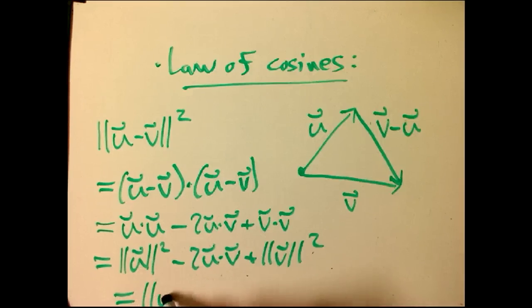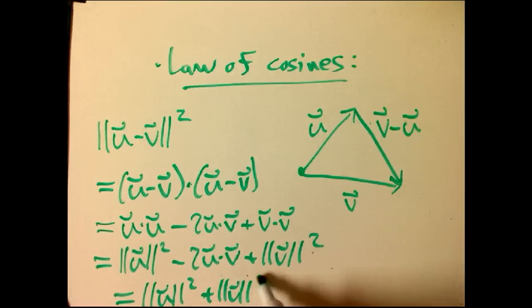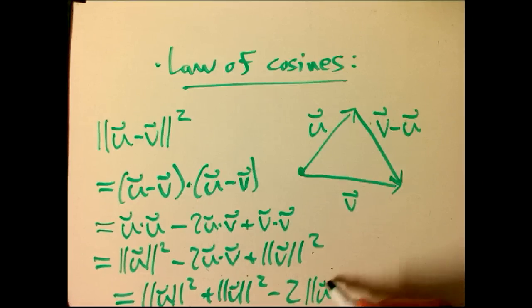Well, that is exactly the law of cosines. U dot v, remember that u dot v divided by the product of the magnitudes was cosine theta. So, I can rewrite this as product of the magnitudes, cosine theta.